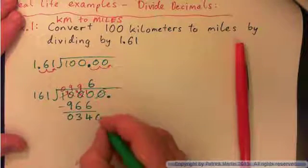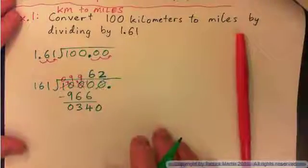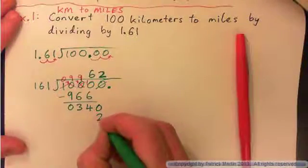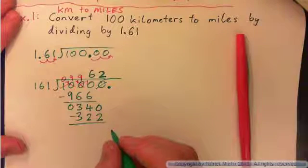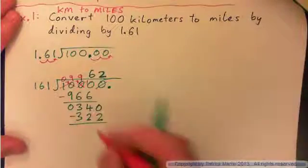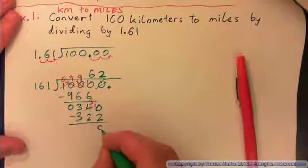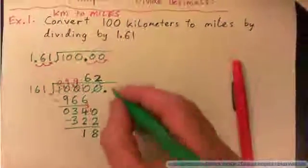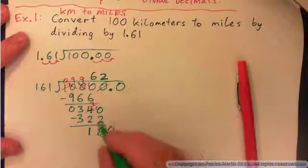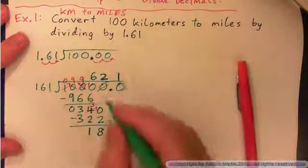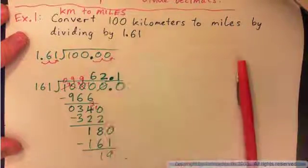This 0 comes down. So 161 into 340 — I'm going to guess twice. 2 times 161 is 322, subtract and get 18, then 0 comes down. 161 into 180 goes one time — 1 times 161 is 161, subtract, and we get 19 and so on. The decimal point must go up here, giving 62.1.